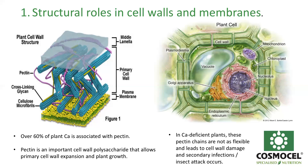Inside the plant cell wall we find pectin. These pectin molecules are very important calcium-associated molecules that allow the cell wall and cell membrane to move, be fluid, and have flexibility — basically governing cell expansion. The agility of the cell is all dependent on pectin, and 60 percent of plant calcium we can associate with pectin.